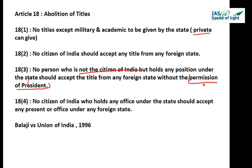Part 4 of Article 18 says no person holding any office of profit or trust under the state shall, without the consent of the President, accept any present, emolument, or office of any kind from or under any foreign state. In summary, this article abolishes all titles — whether national or foreign — that create artificial distinctions in the social status of persons. This provision was included to do away with hereditary titles like Rai Sahib, Raja, and Rai Bahadur, which the British conferred on Indians as rewards for cooperation with colonial rule.